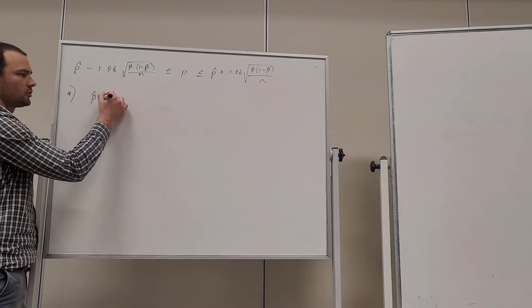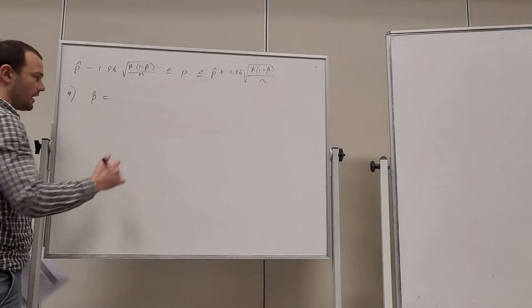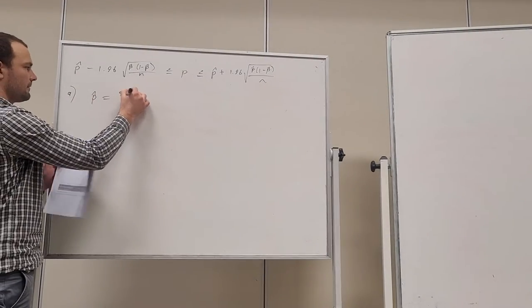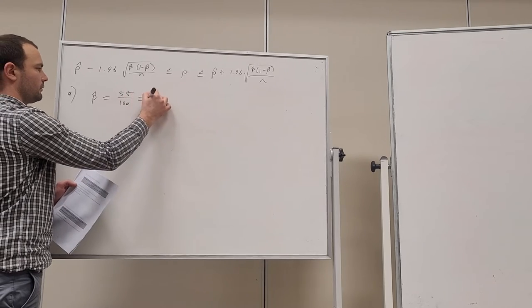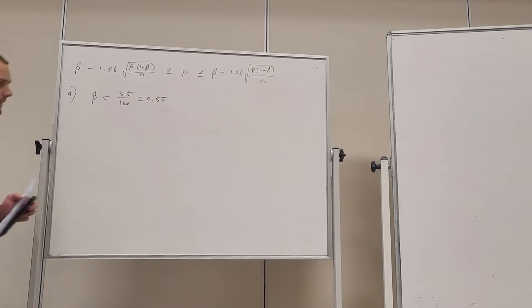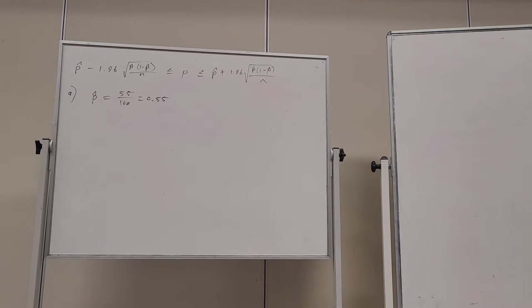Well, P-hat is equal to x on n, so 55 on 100, or 0.55. That's the probability of 100 people wanting to be playing 0.55.